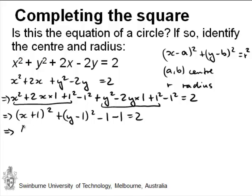And if we continue here, we can write this as x plus 1 squared plus y minus 1 squared minus 2 is equal to 2, or bring across the minus 2, meaning we're adding 2 on both sides. And that's equal to 4, and 4 is, of course, 2 squared.